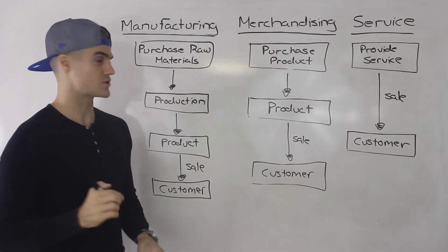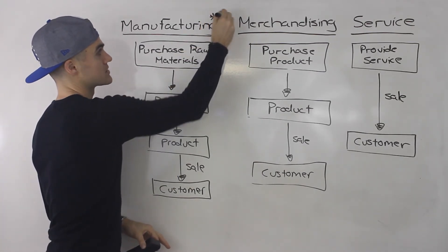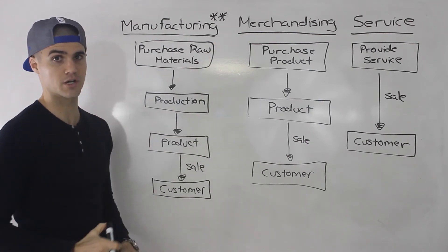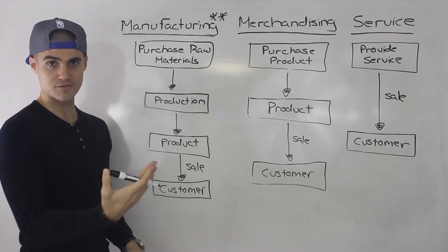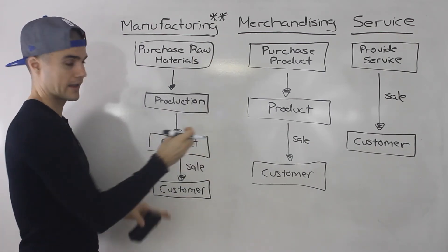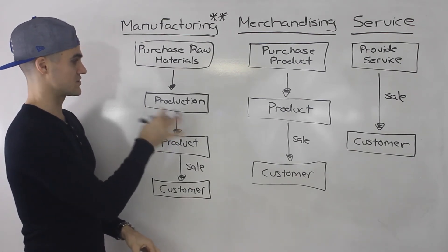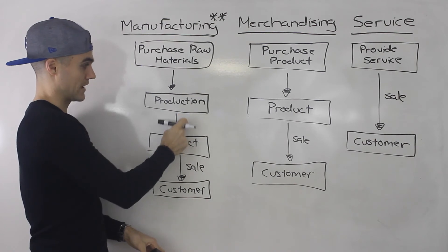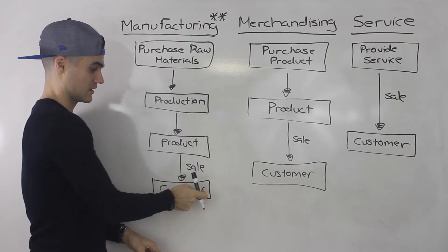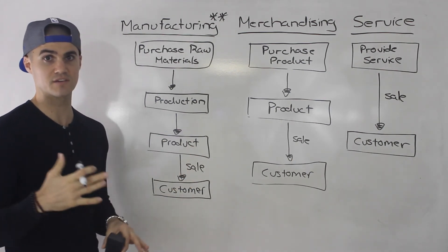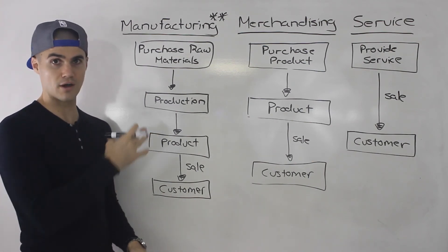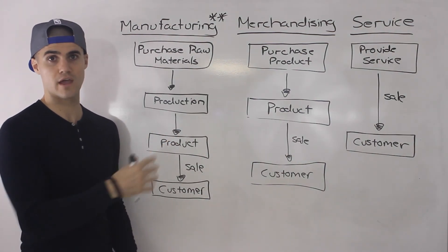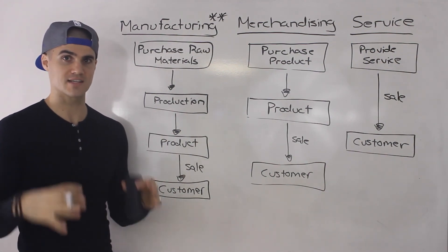In this course, we're mostly going to be focusing on manufacturing companies, though you'll definitely run into questions dealing with merchandising and service companies too. What I'm going to be doing over the next few videos is taking these flowcharts and getting more specific — kind of zooming in. For example, with a manufacturing company, there's a lot more detail in the production cycle, the arrow from production to product, the sale to the customer, specific accounts affected, and specific statements. Thought I'd give you this high-level overview first so you understand what's going on, as these flowcharts are pretty important to have as a base.